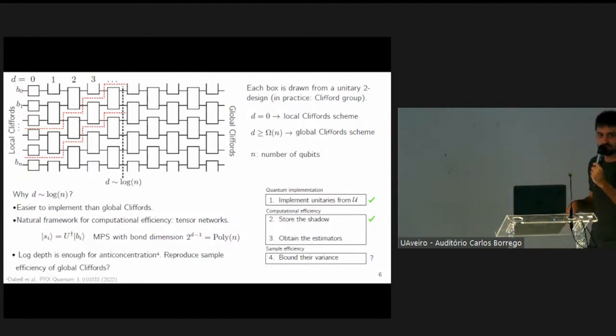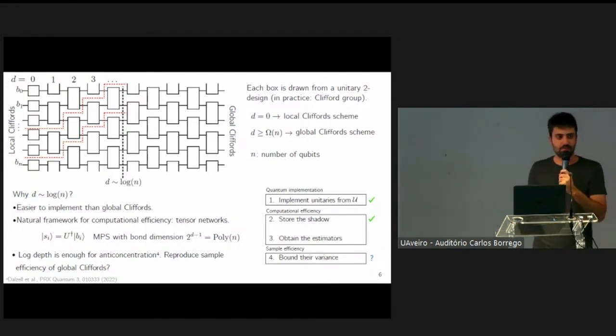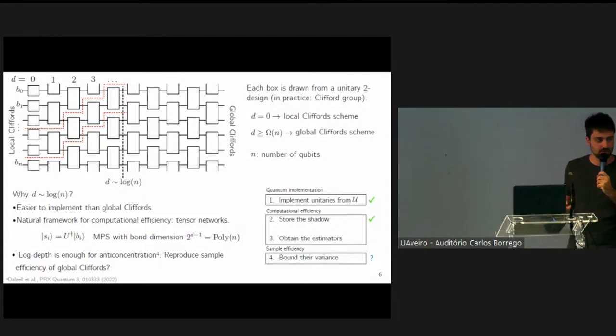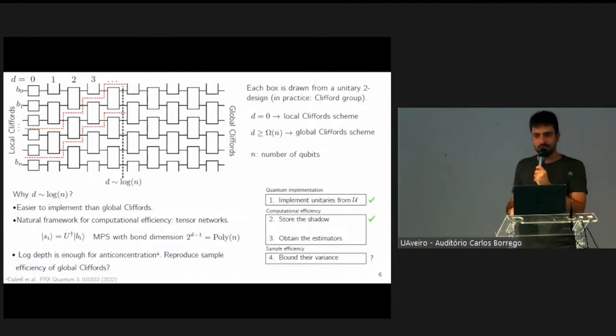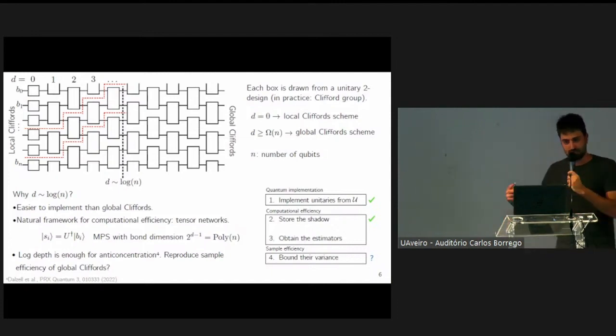Third, these two points are great, and there are reasons for picking a depth smaller than logarithmic. But why should we go all the way to logarithmic? One motivation is that it is known that log depth is the threshold for anti-concentration, which essentially means that the output distribution of these log depth circuits already looks sort of like the output distribution of global Cliffords. So we might hope to reproduce the sample efficiency of the global Clifford scheme already at log depth, which to some extent actually happens, as I will explain in a few minutes.